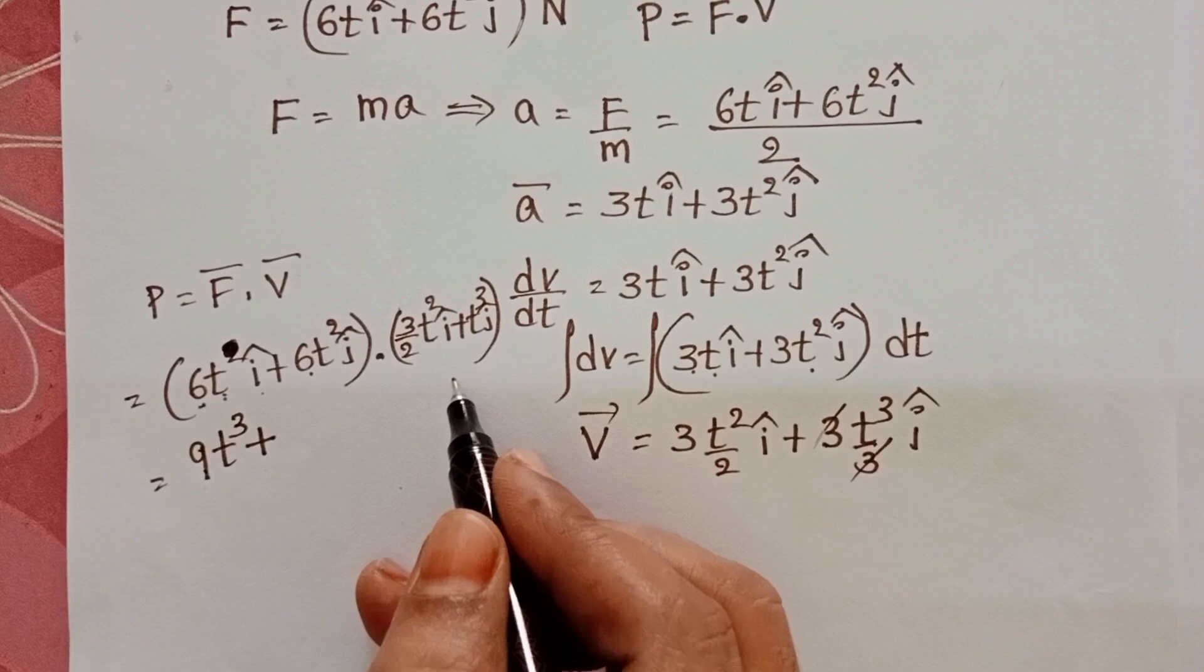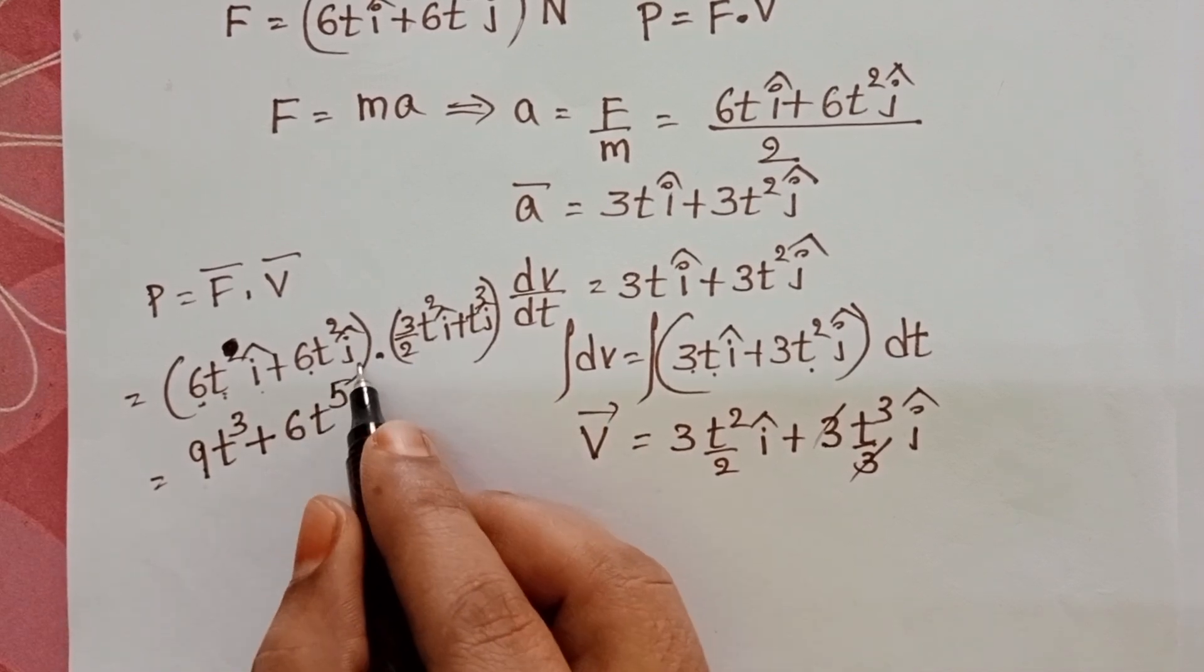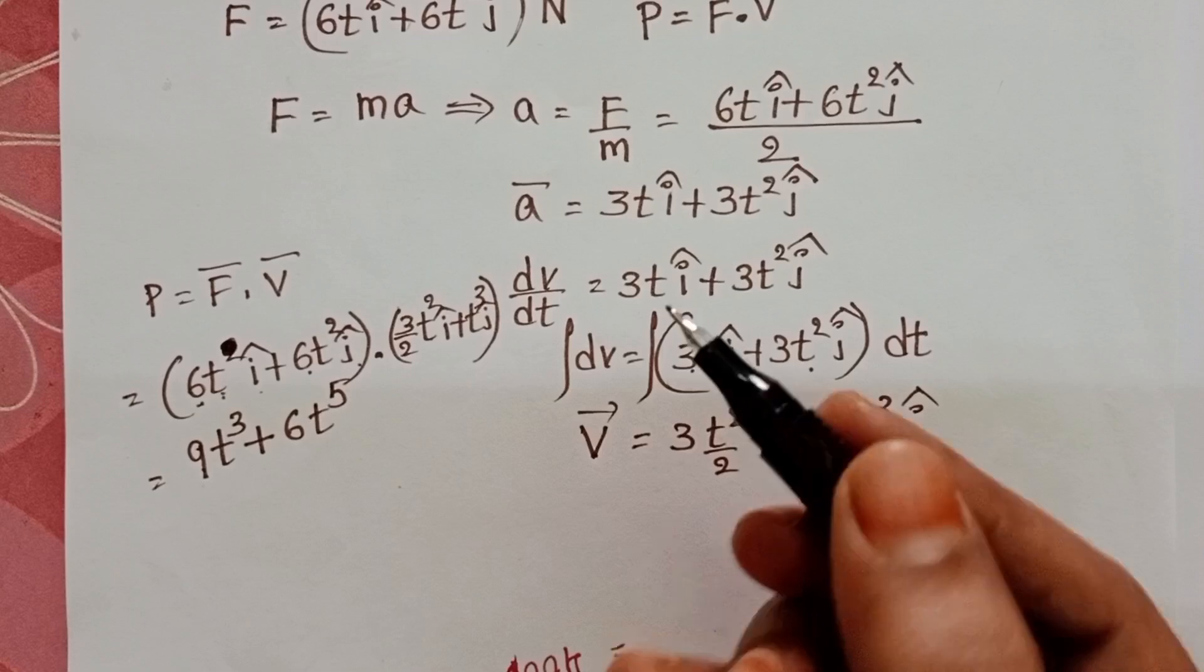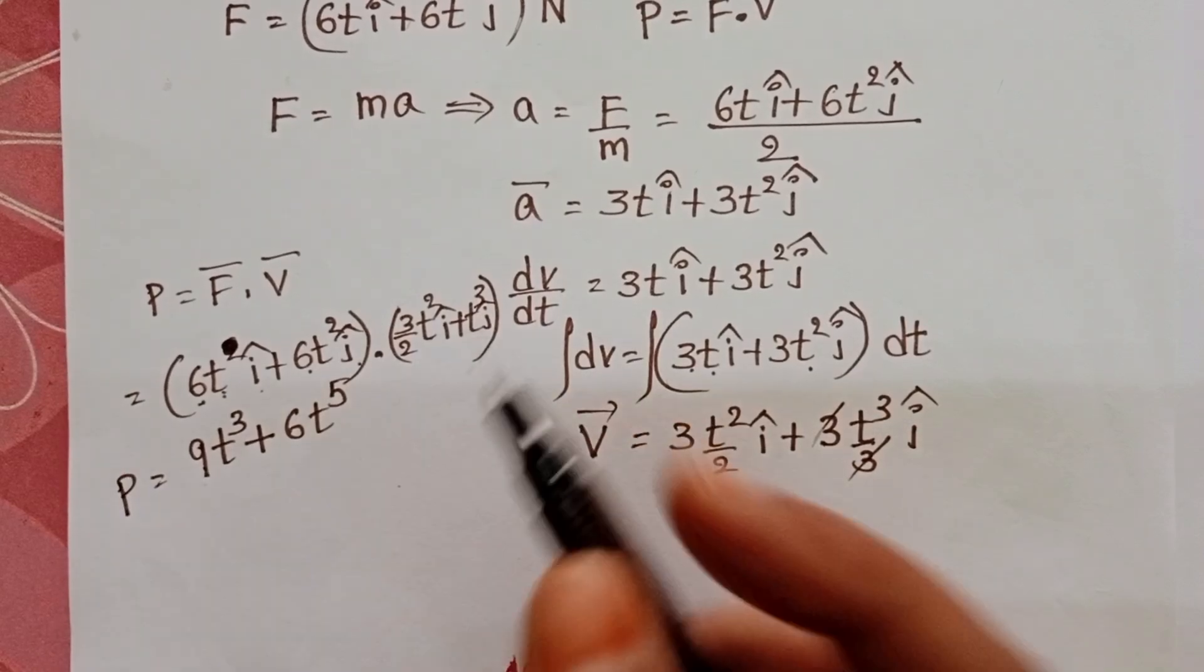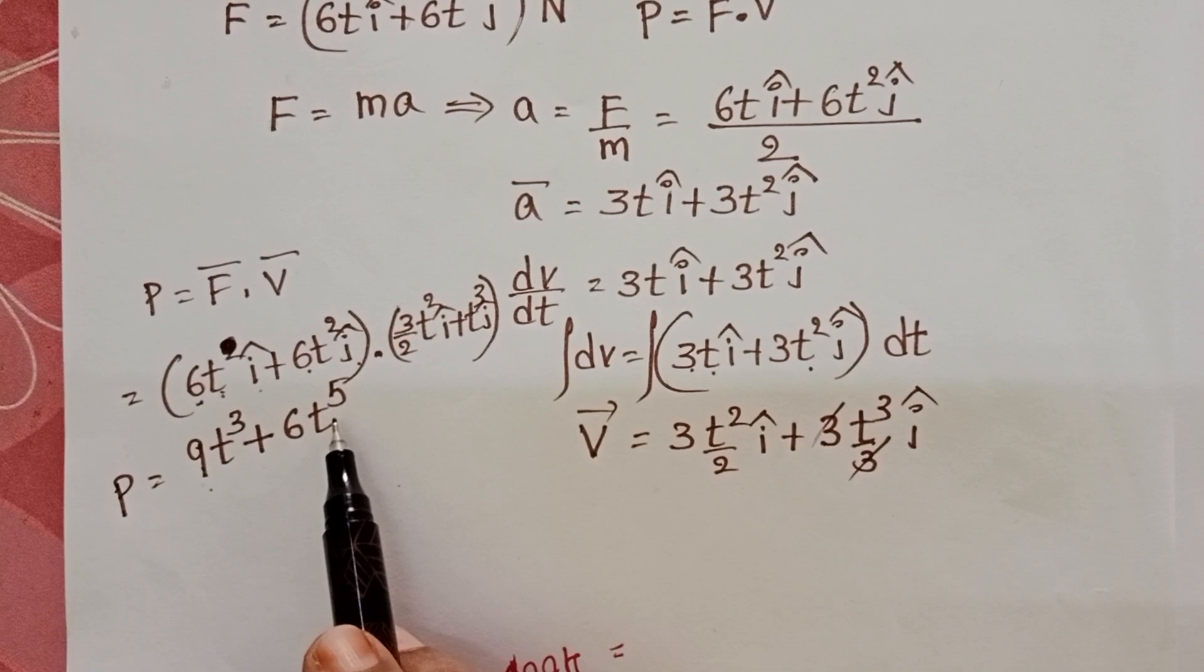Plus 6t² times t³ equals 6t⁵. ĵ dot ĵ equals 1. So power equals 9t³ plus 6t⁵.